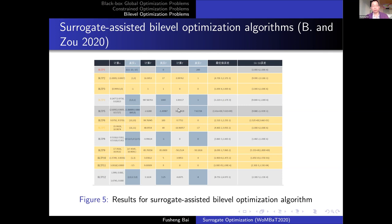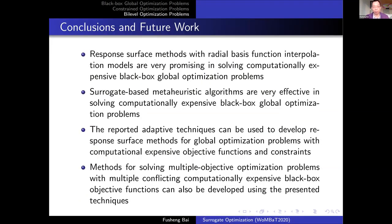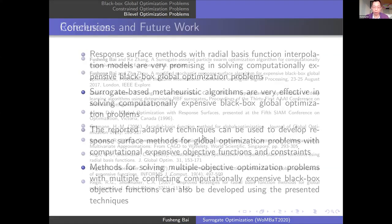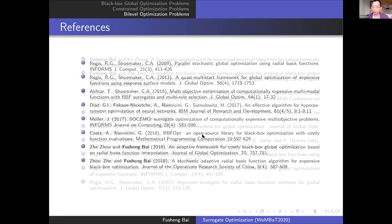In conclusion, response surface methods — also called surrogate optimization — using radial basis functions and interpolation are very promising. Combined with metaheuristic algorithms they are quite effective, and can also be applied to constrained problems and multiple objective optimization problems, which we are also currently working on. Thank you very much for your attention.